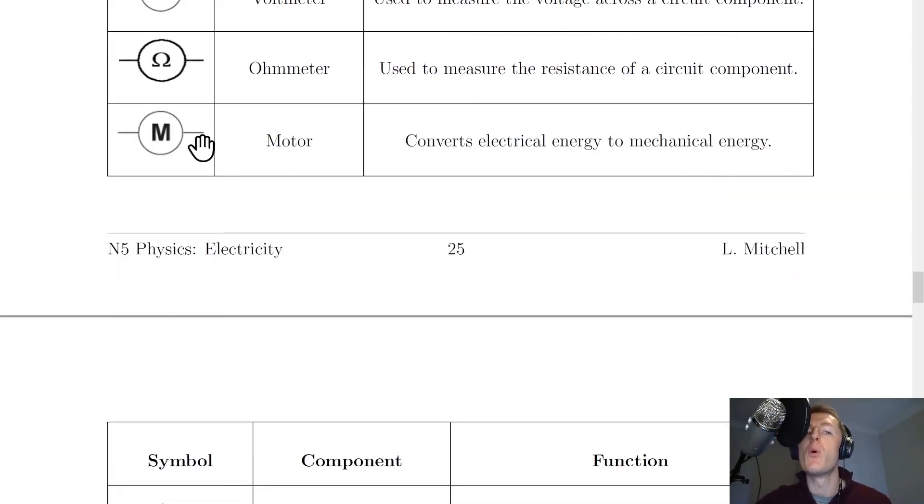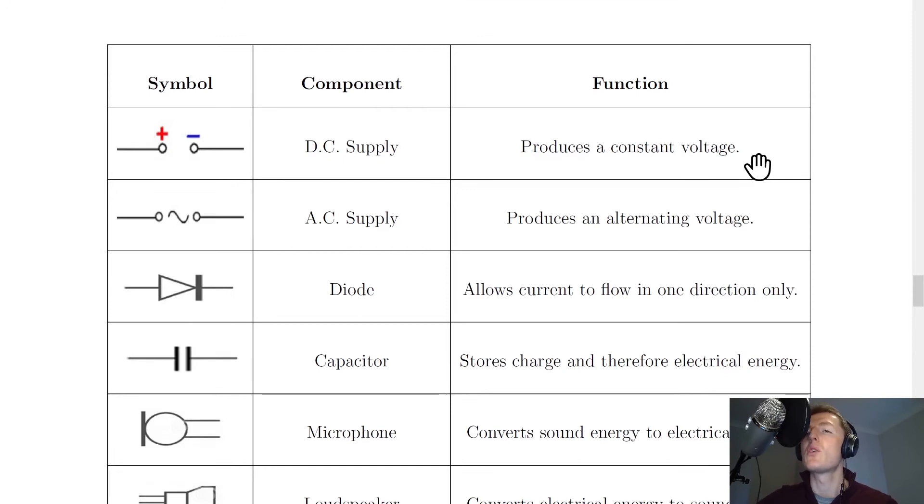Moving on then, we have the motor. And a motor is a big circle with a capital M in it. And a motor converts electrical energy to mechanical energy, usually in order to move something. So what we've looked at so far is some of the more simpler components that you'll find in circuits. But we're going to now look at more components which you might also find in your circuits.